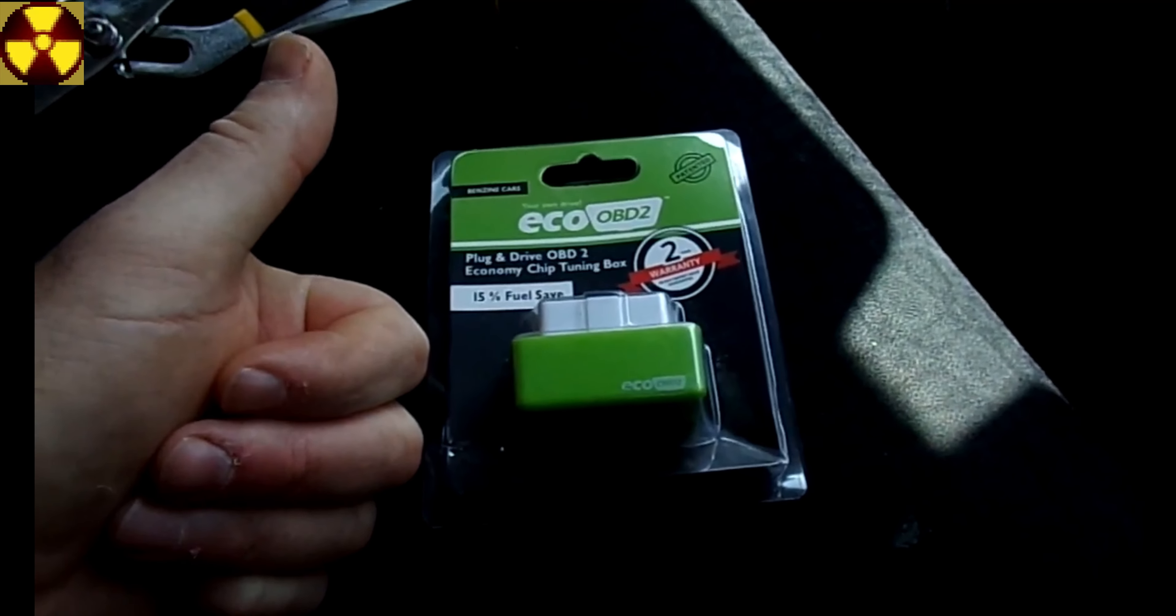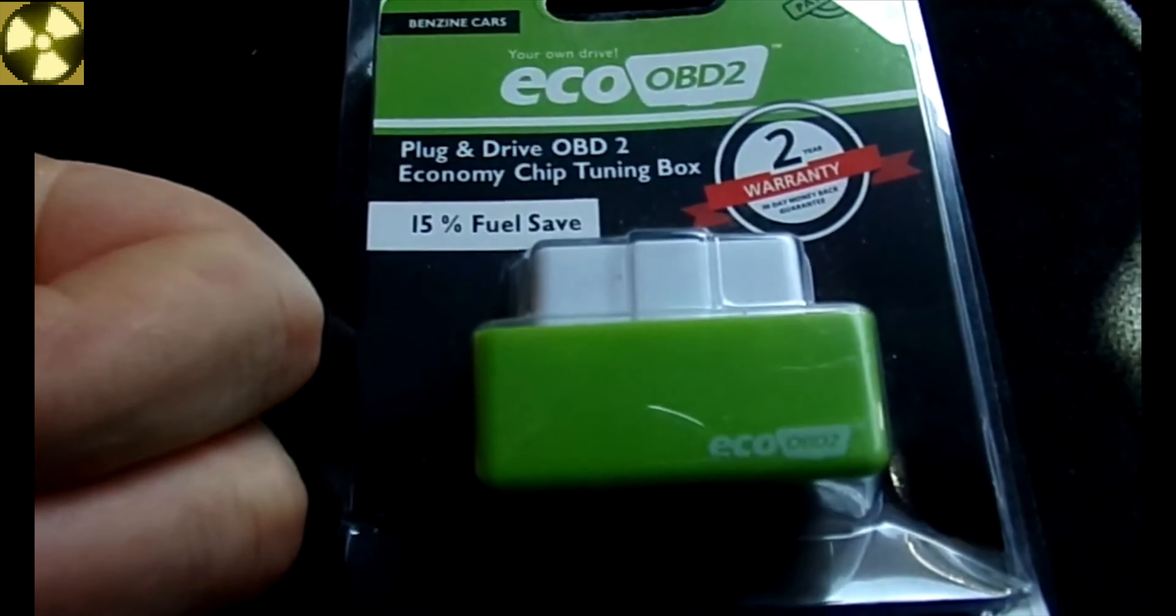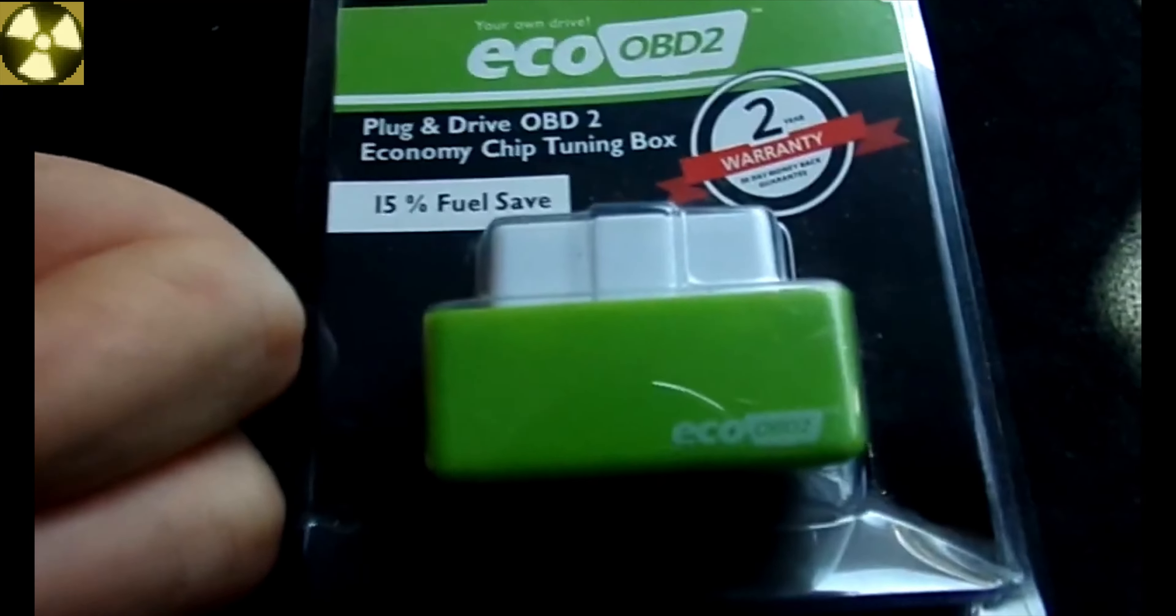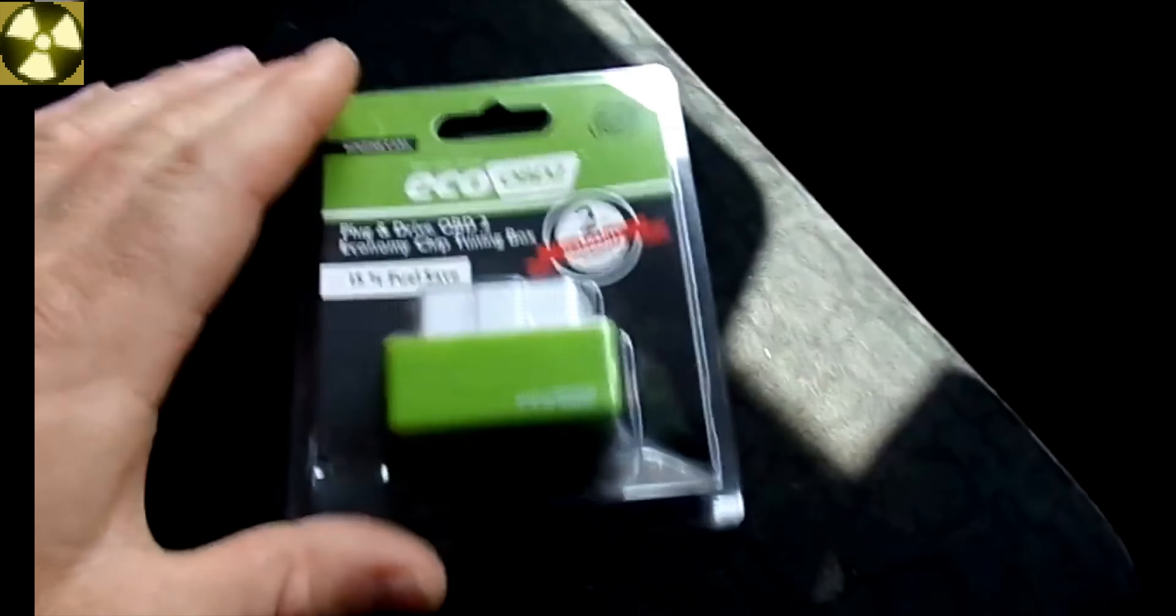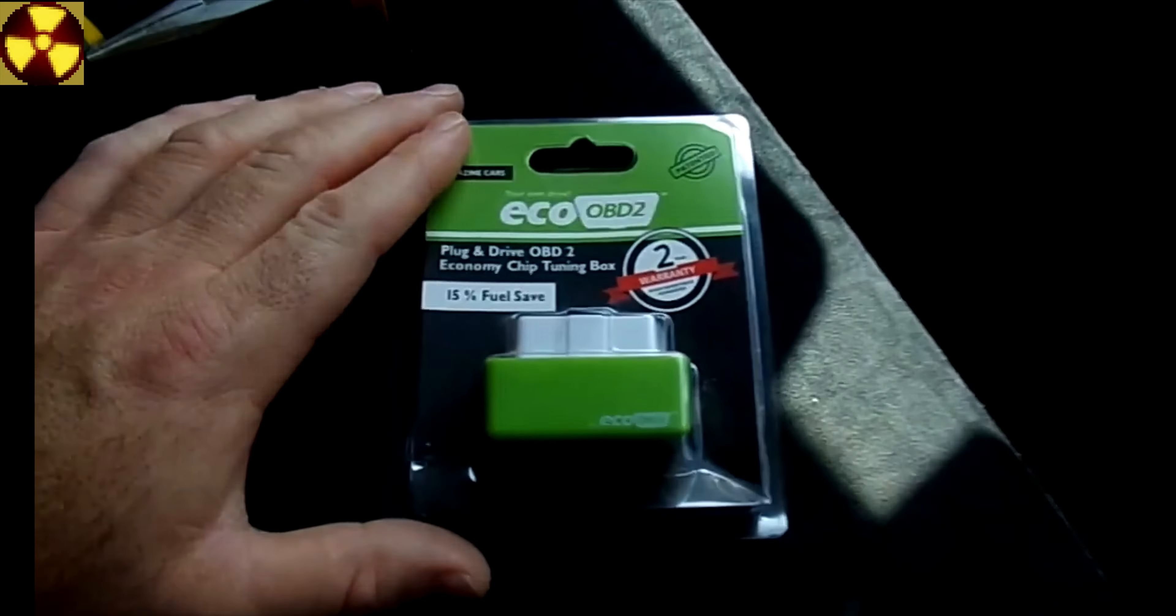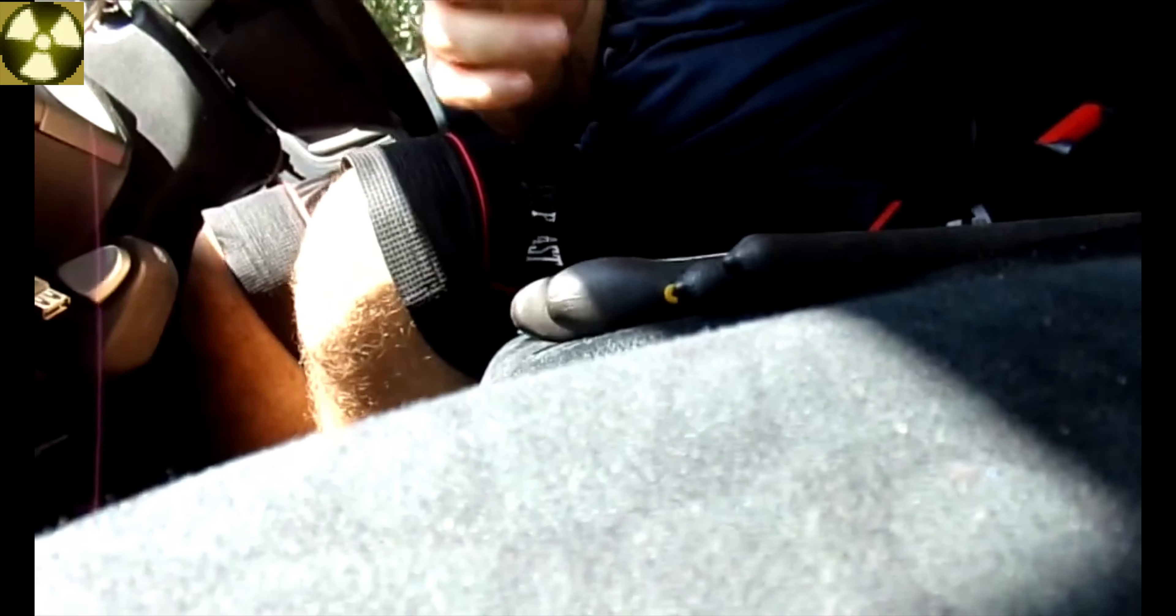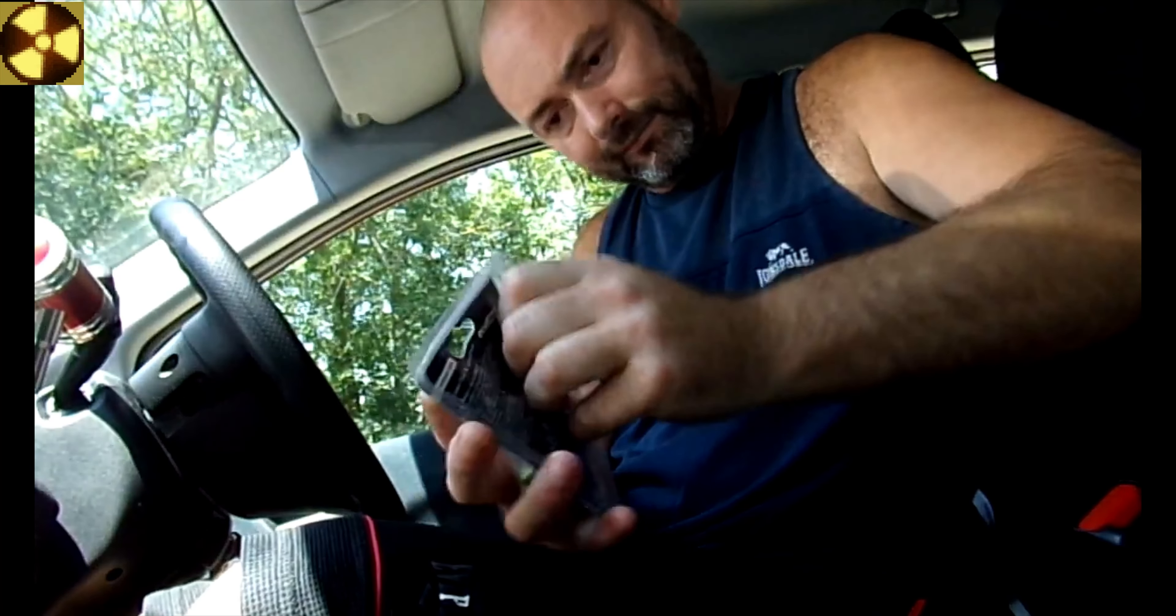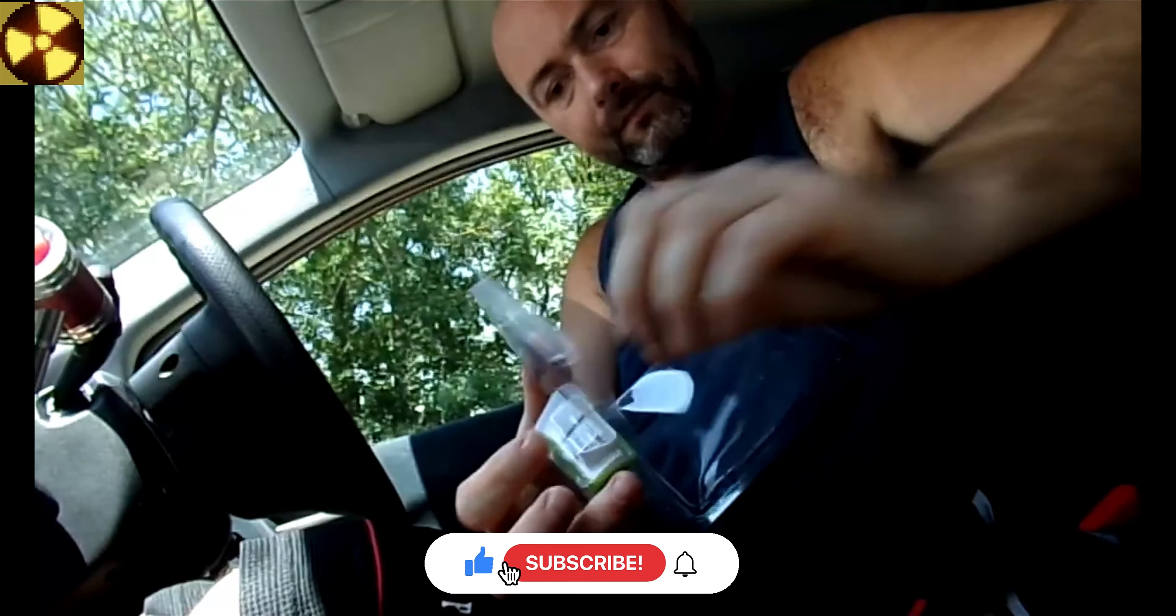Today we are installing one of these tasty morsels. It is the plug-in and drive OBD2 economy chip tuning box. It's a mouthful, isn't it? And what it is, it claims to save you money on your petrol because petrol is getting more and more expensive these days. It's getting a pain in the arse. The old instruction on the back. You can get them from eBay for about £2 or $3. They are readily available. If you get them from the UK, they are about £5 to £10. But if you want to wait a month to a year, then get them from China. Anyway, this is what we do. They take it out of the box. It's really up on here. And we got this.